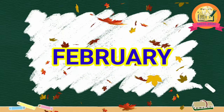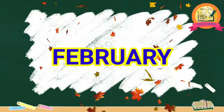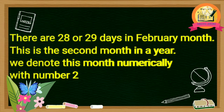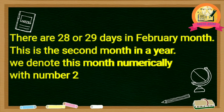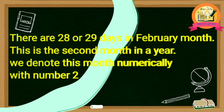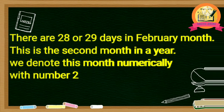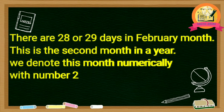February — F-E-B-R-U-A-R-Y. There are 28 or 29 days in February month. If it is a leap year, we will have 29 days in February month. And if it is not a leap year, we will have 28 days in February month. This is the second month in a year. We denote this month numerically with number 2.